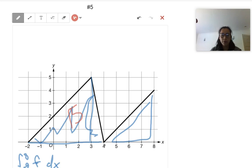Same thing over here. We'll do four to eight, that's going to be a length of four and then a height of four. So four times four divided by two is going to be eight.